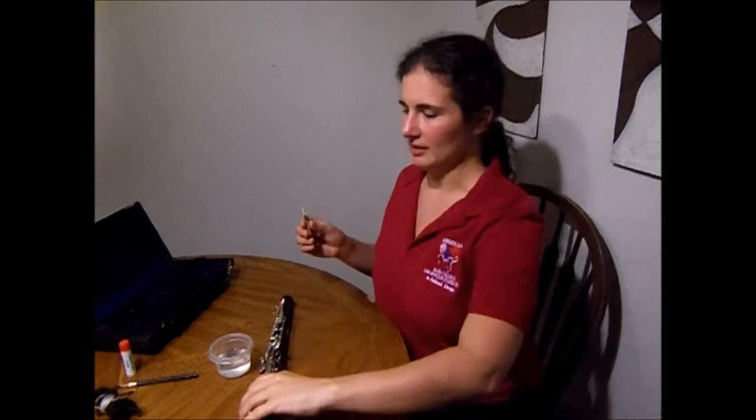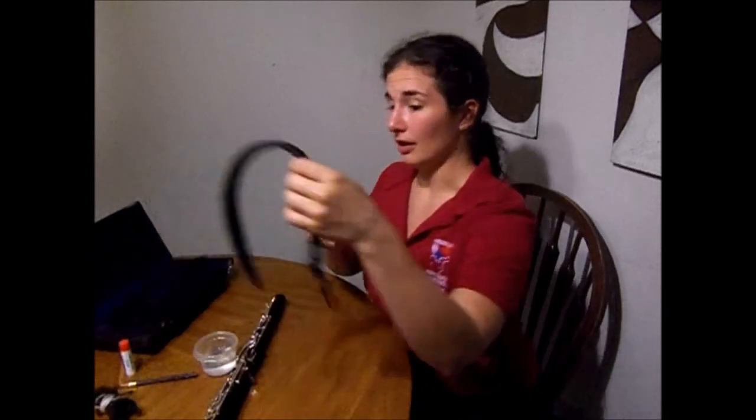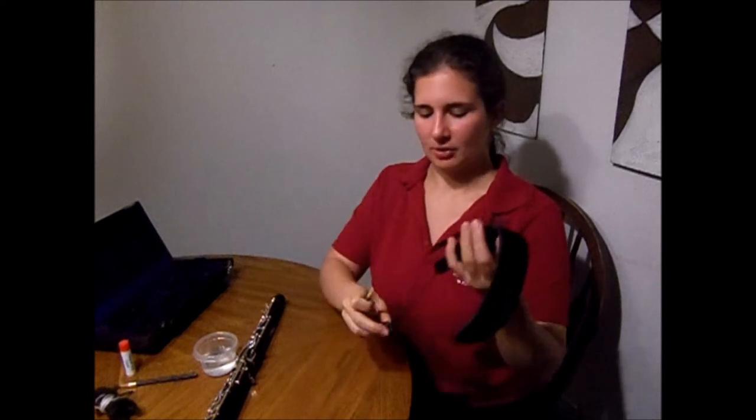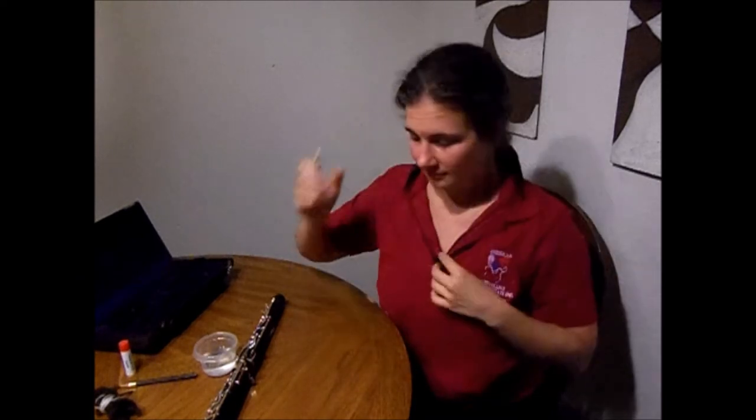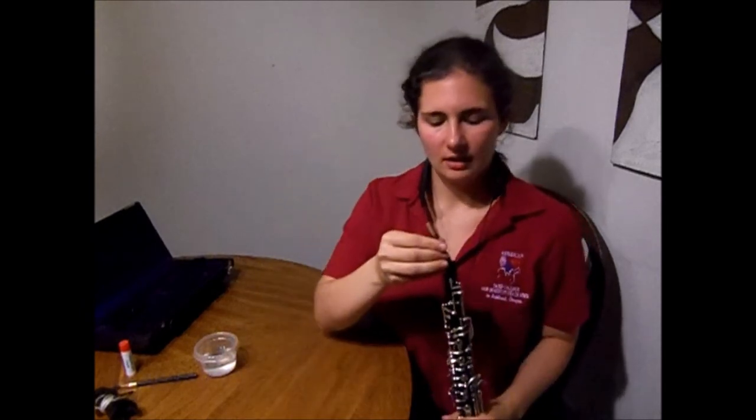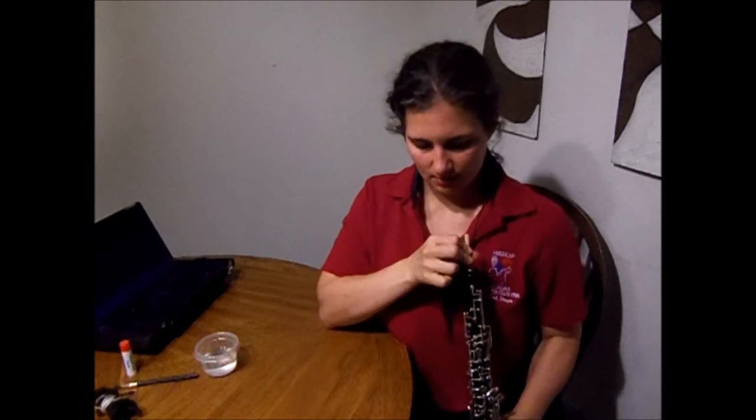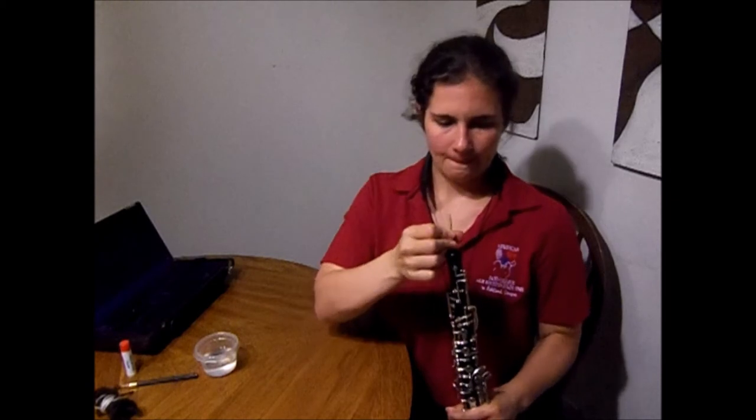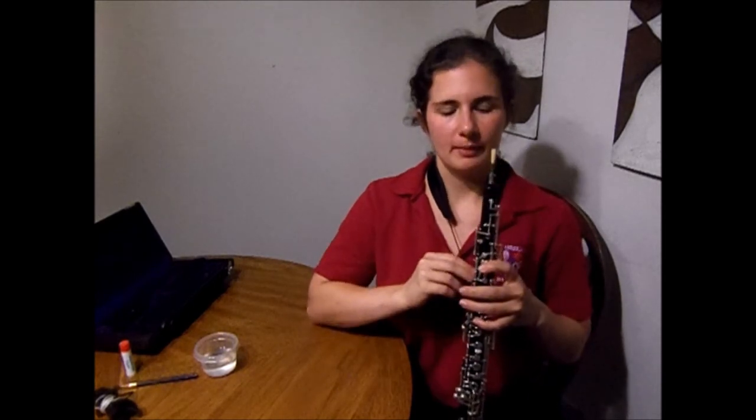When we put that together with the instrument, first we'll put on our neck strap to protect our wrists. Very carefully place the reed inside the instrument. And we're going to start with just one finger. You want to make sure you have your neck strap the right length so that you just get as little reed as possible in your mouth.